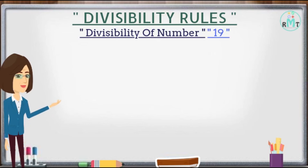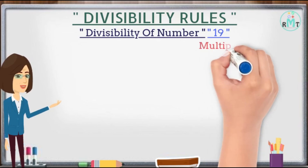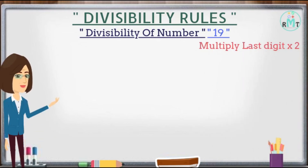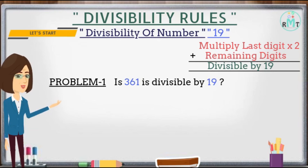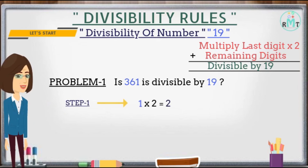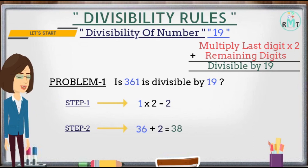Now we will check the divisibility rule for number 19: a number is divisible by 19 if its last digit multiplied by 2 then added to the remaining number is divisible by 19. Problem 1: Is 361 divisible by 19? Step 1: Multiply the last digit 1 by 2 and get 2. Step 2: Add 2 to the remaining digits 36 and get 38, which is divisible by 19. Hence 361 is divisible by 19.